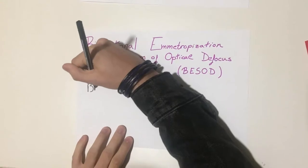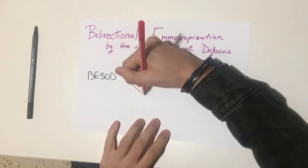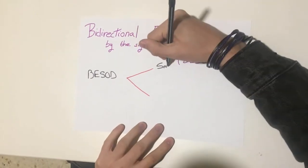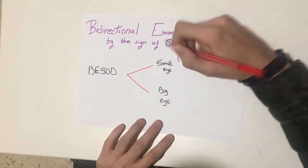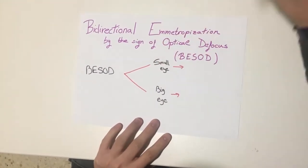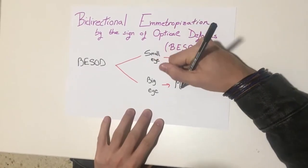Besod explains how the retina activates different pathways of genes depending on the signals it receives from the environment. One pathway makes the eyes grow small and the other one to grow big. If you get small eyes, you develop hyperopia, while with big eyes, myopia is developed.